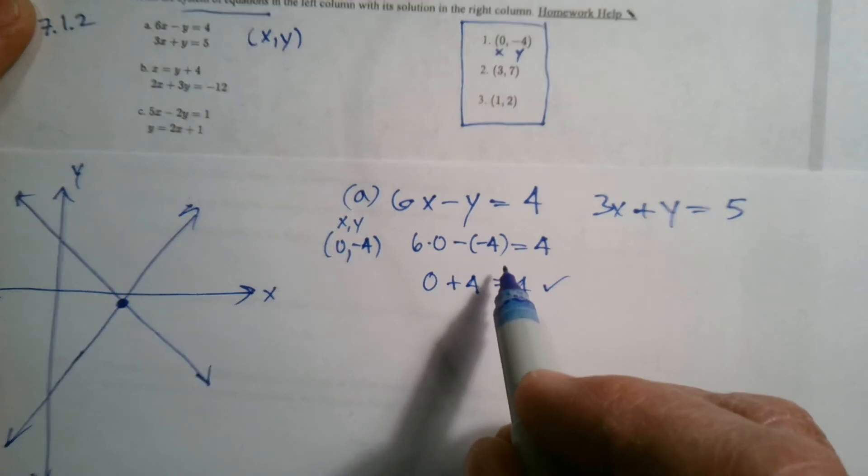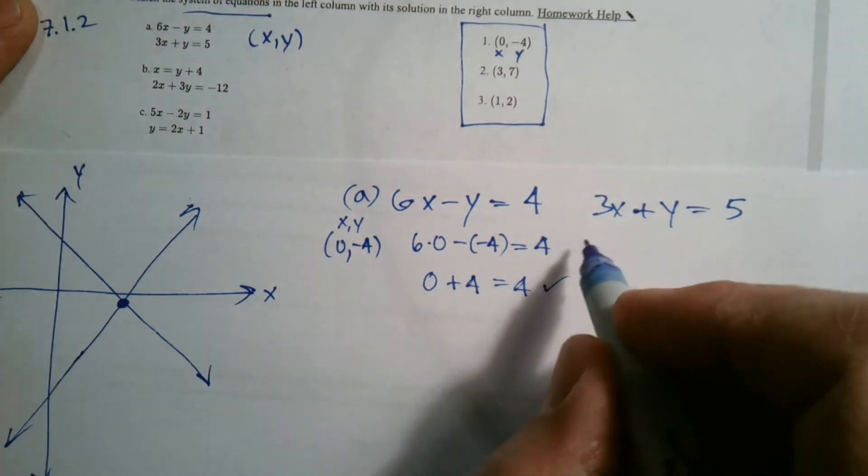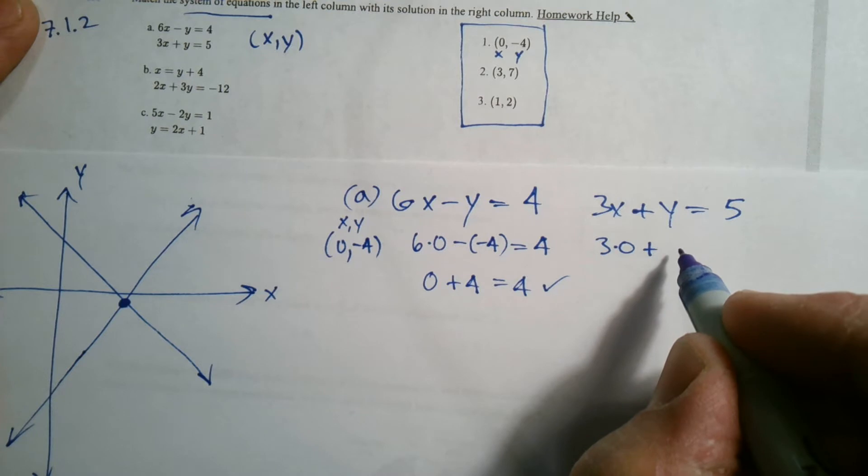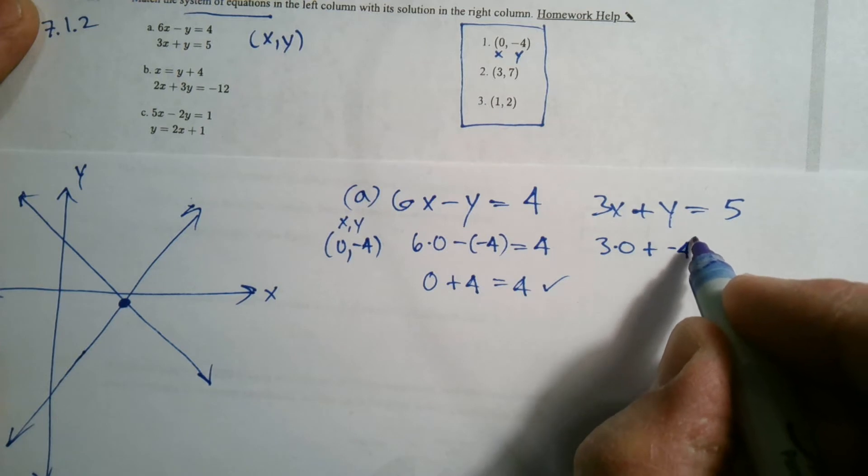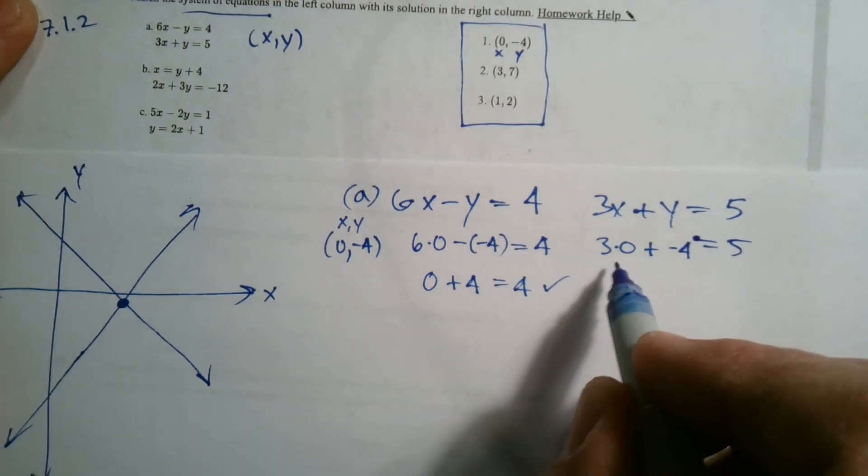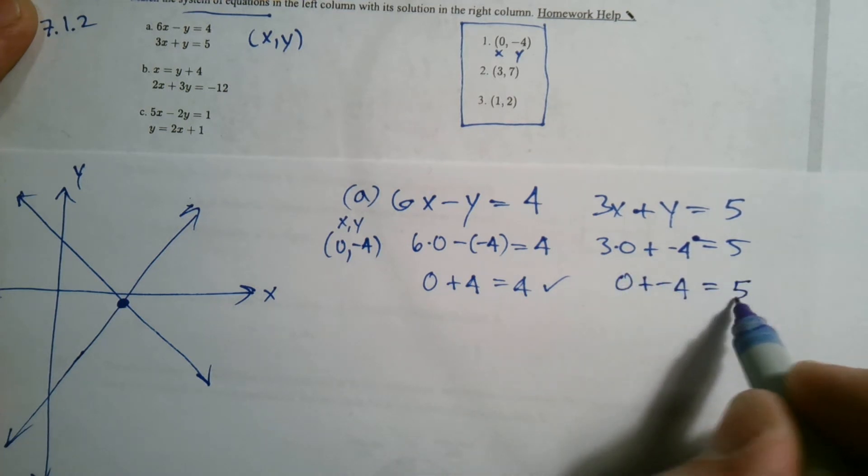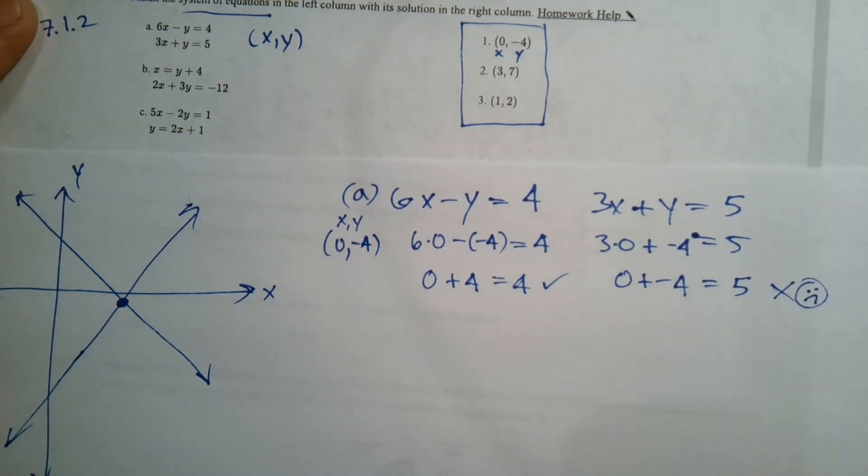So it works for this one. But that doesn't guarantee it's the right answer. I still have to check it. It's got to work for both of them. So let me put a 0 in here. So 3 times 0 plus, what do I have for y? Negative 4. Does that equal 5 is the question. So if I look, I'm going to go 3 times 0 is 0. 0 plus negative 4. Does 0 plus negative 4 equal positive 5? No, it does not. Those are not equal.